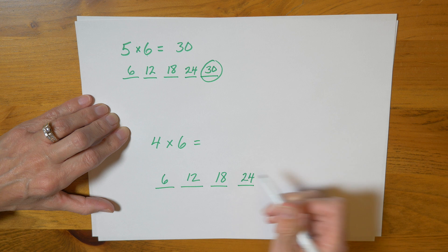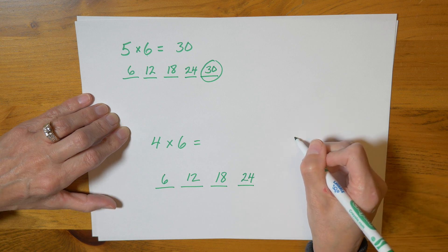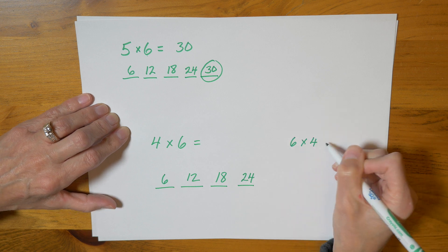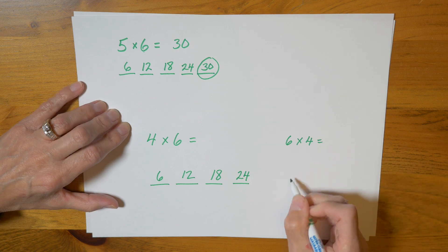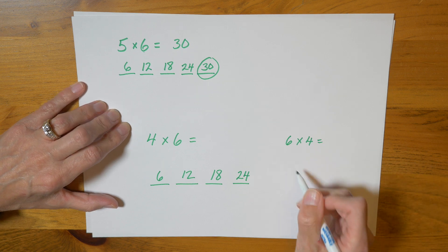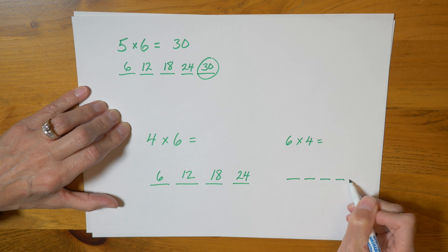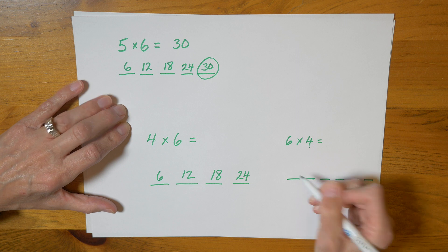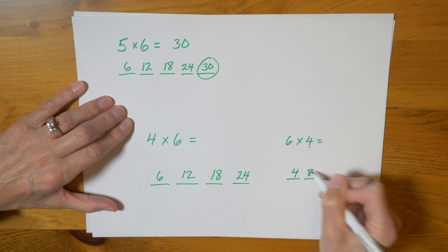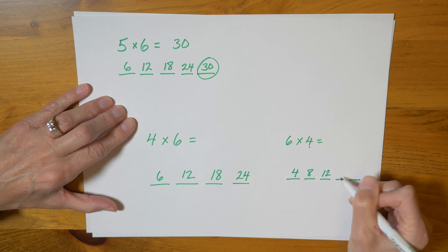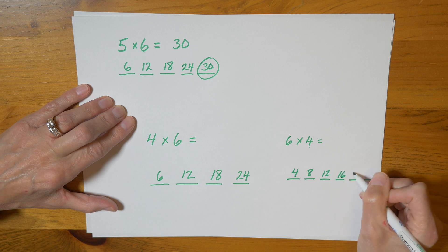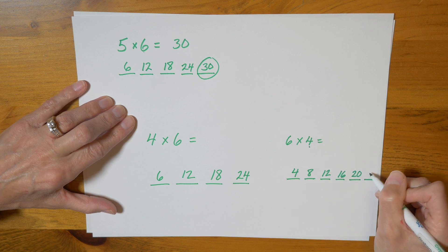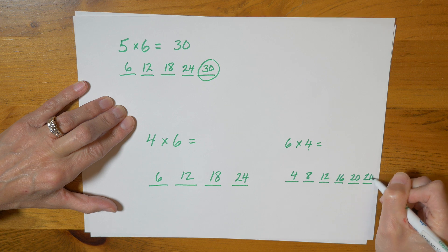If I turned it around and did six times four, I could skip count like this. But I'd have to give myself six spaces. One, two, three, four, five, six. And this time I'd be skip counting by fours. And it would look like this. Four, eight, twelve, sixteen, twenty, twenty-four.